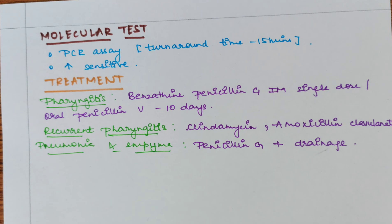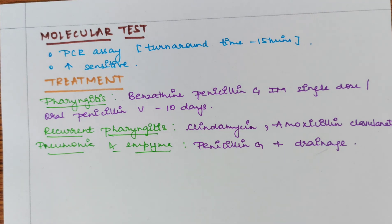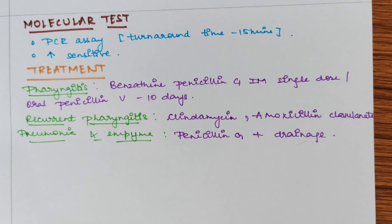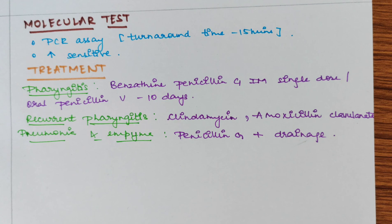Treatment includes pharyngitis treatment, recurrent pharyngitis treatment, and pneumonia and empyema treatment. For pharyngitis, benzathine penicillin G is given intramuscularly as a single dose, or oral penicillin V is given for 10 days. For recurrent pharyngitis, clindamycin and amoxicillin-clavulanate are given. For pneumonia and empyema due to vertical spread, penicillin G is given along with drainage of empyema.